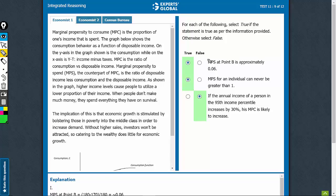The first statement talks about MPS at point B. Let's understand MPS very quickly. MPS is the ratio of disposable income less consumption, so income minus consumption upon disposable income, in a way savings upon income.